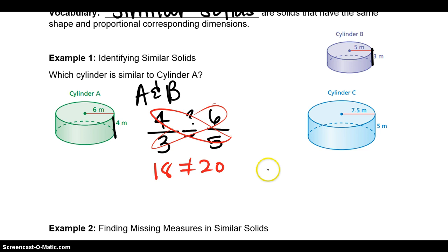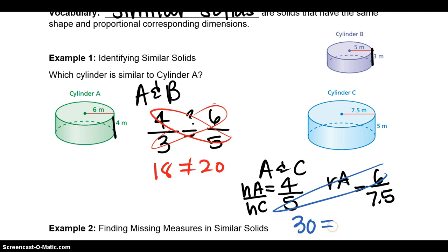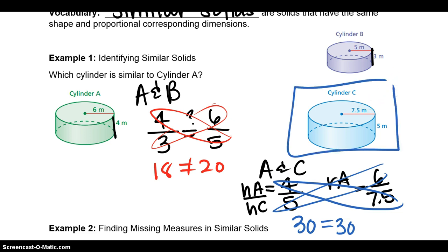So we try A and C. The height of A is 4 and the height of C is 5. The radius of A is 6 and the radius of C is 7.5. Using cross products: 6 times 5 is 30, and 4 times 7.5 is also 30. So cylinder C is similar to cylinder A. Another way: 4 divided by 5 equals 0.8, and 6 divided by 7.5 also equals 0.8.